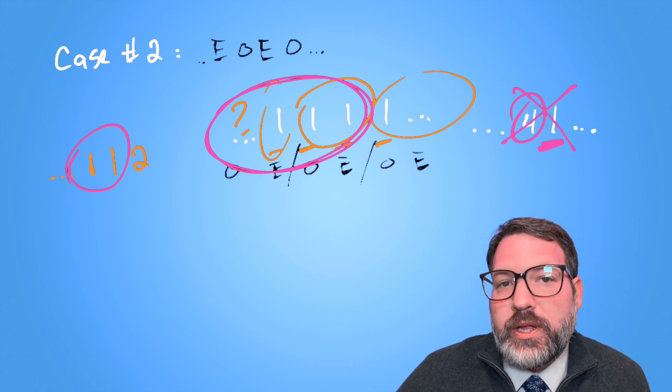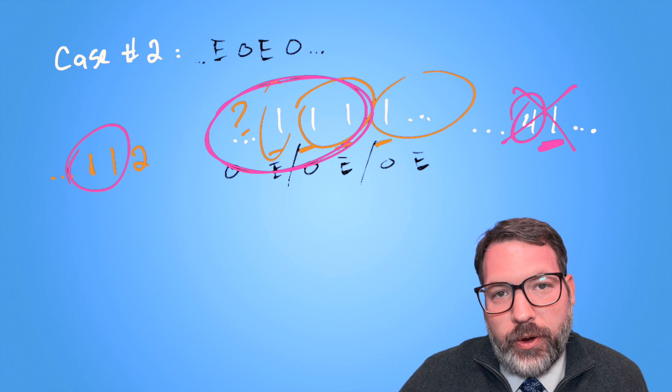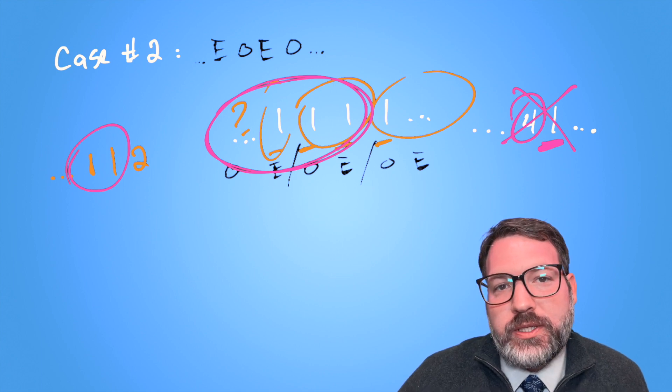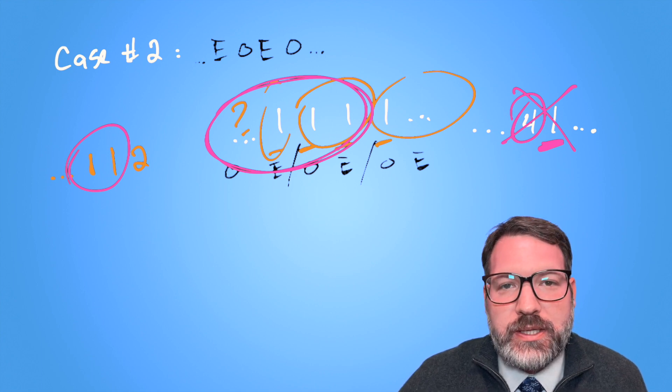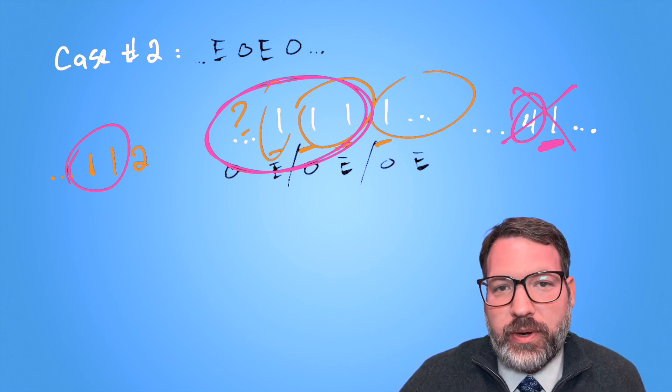And so again, we can tell that could not really have generated four ones in a row. At this point, we've shown why the only two cases that could generate a four don't actually happen. And therefore we can see no four will ever be generated in this sequence.